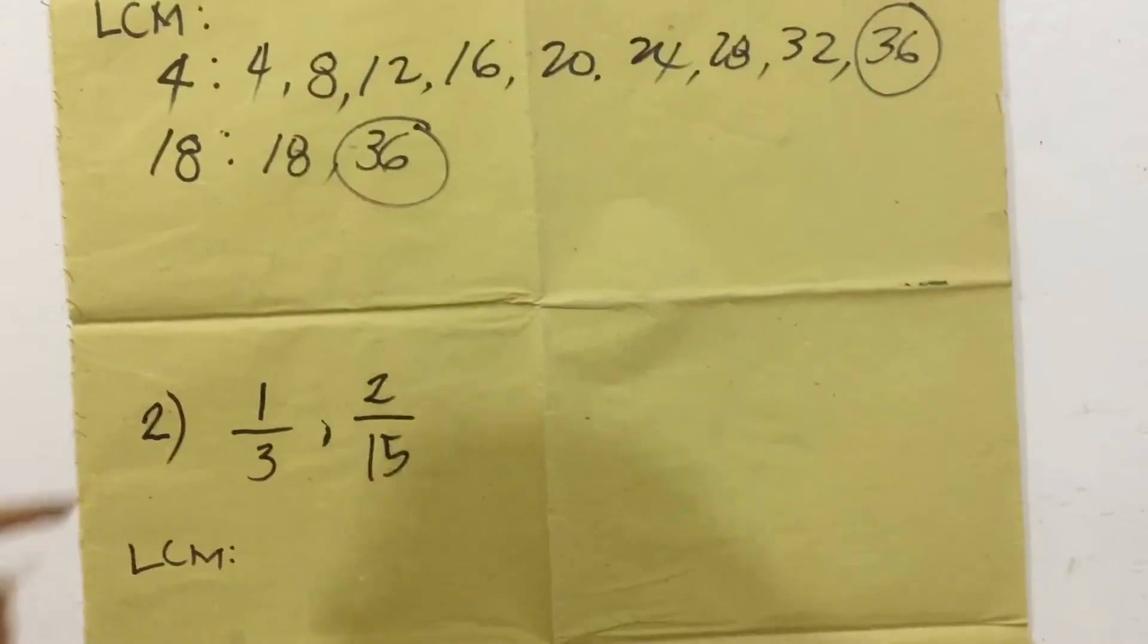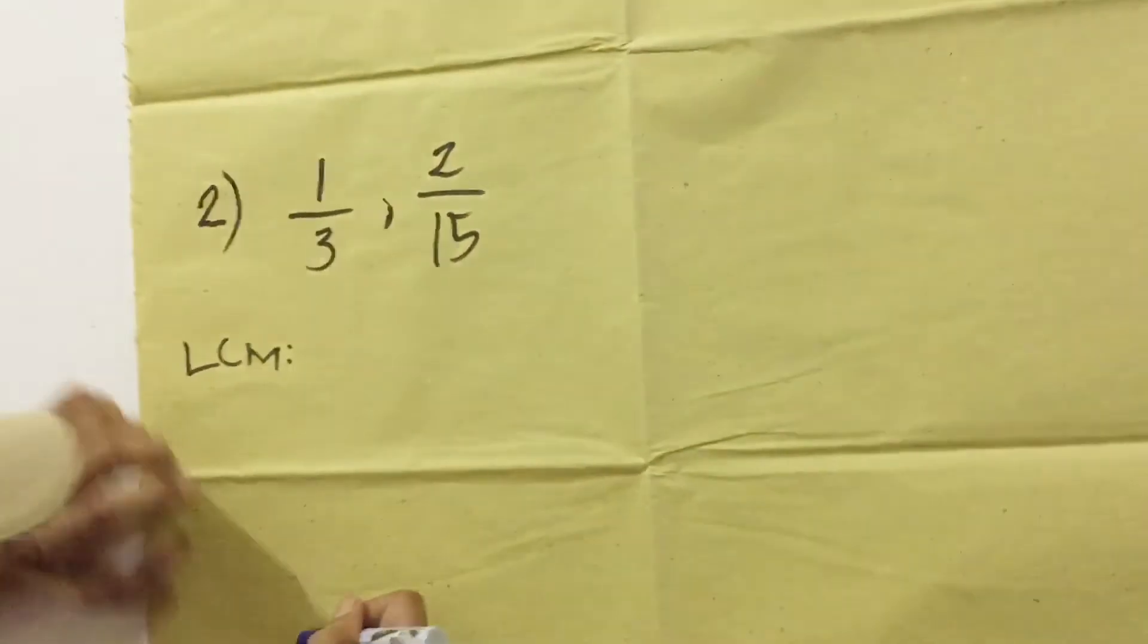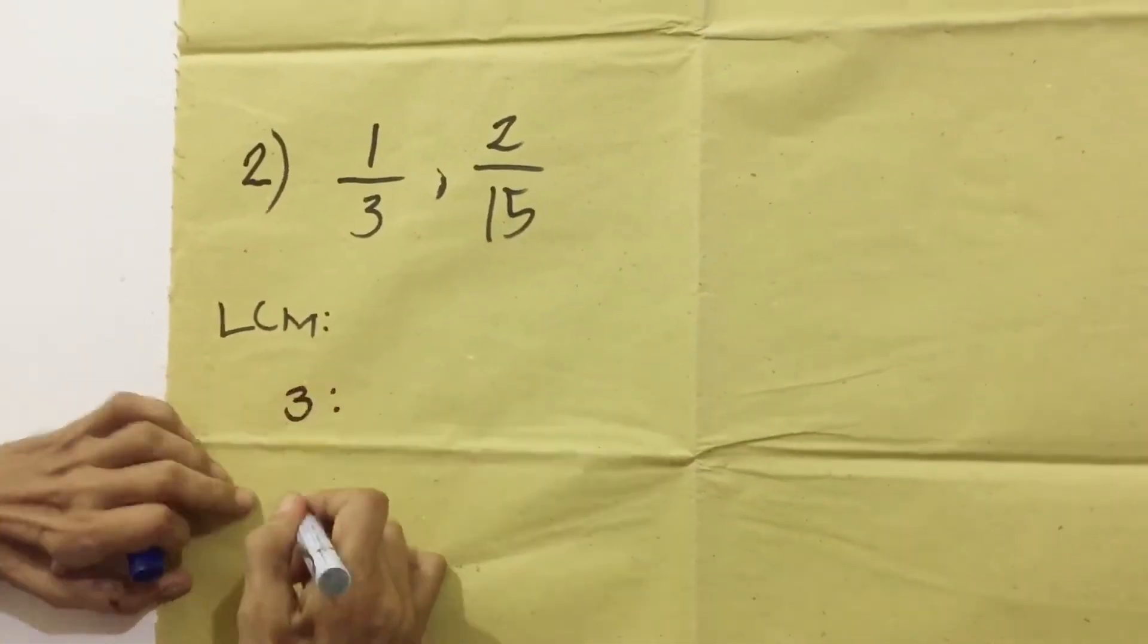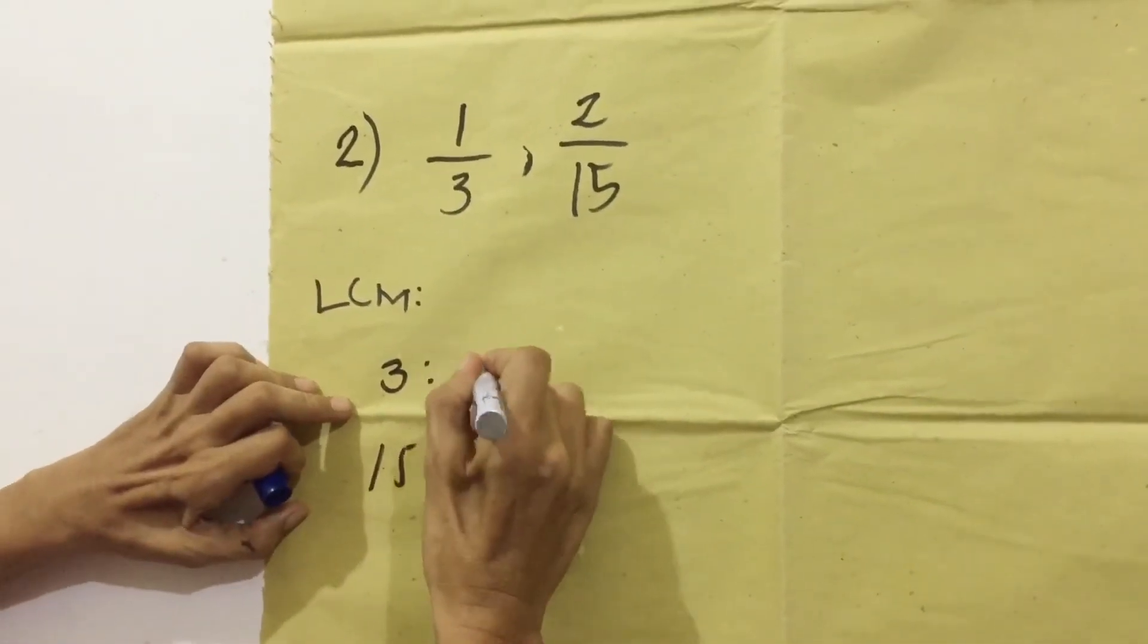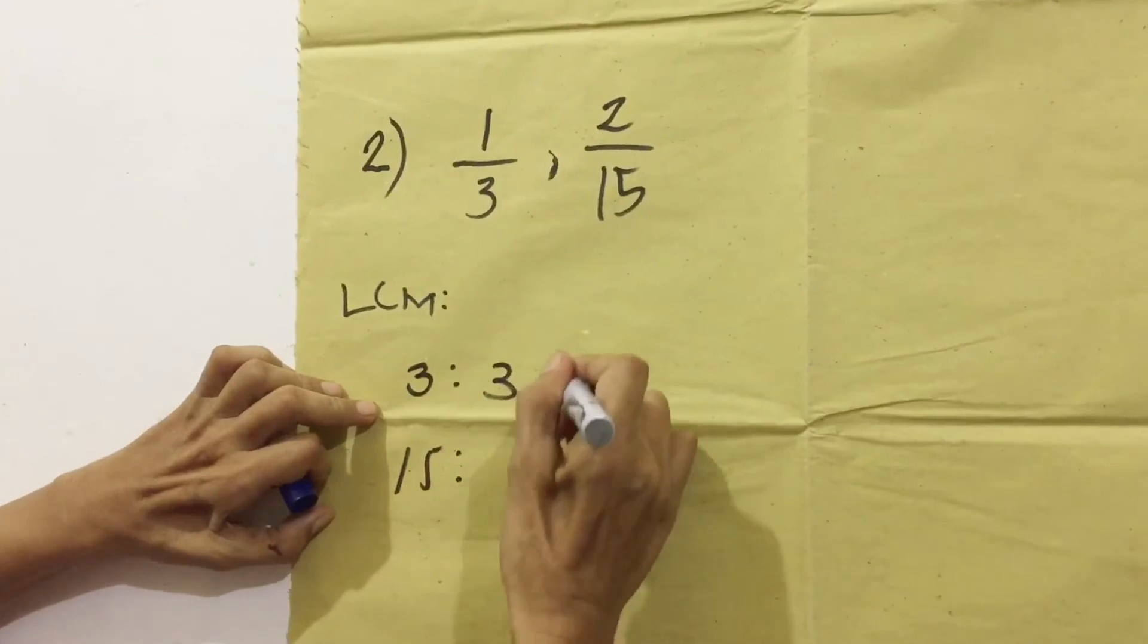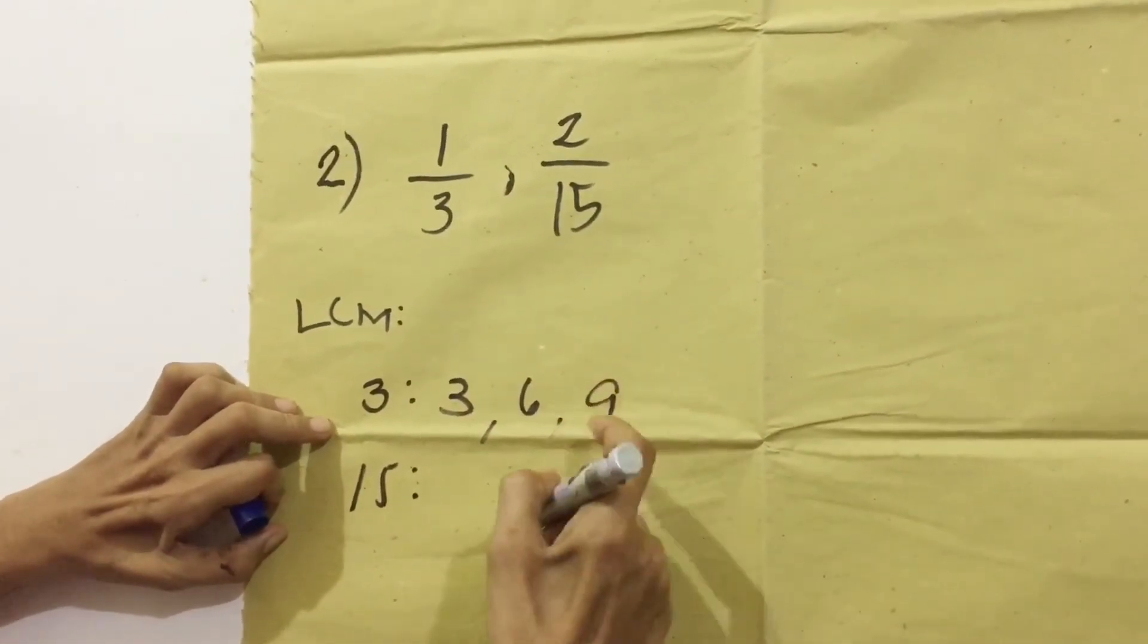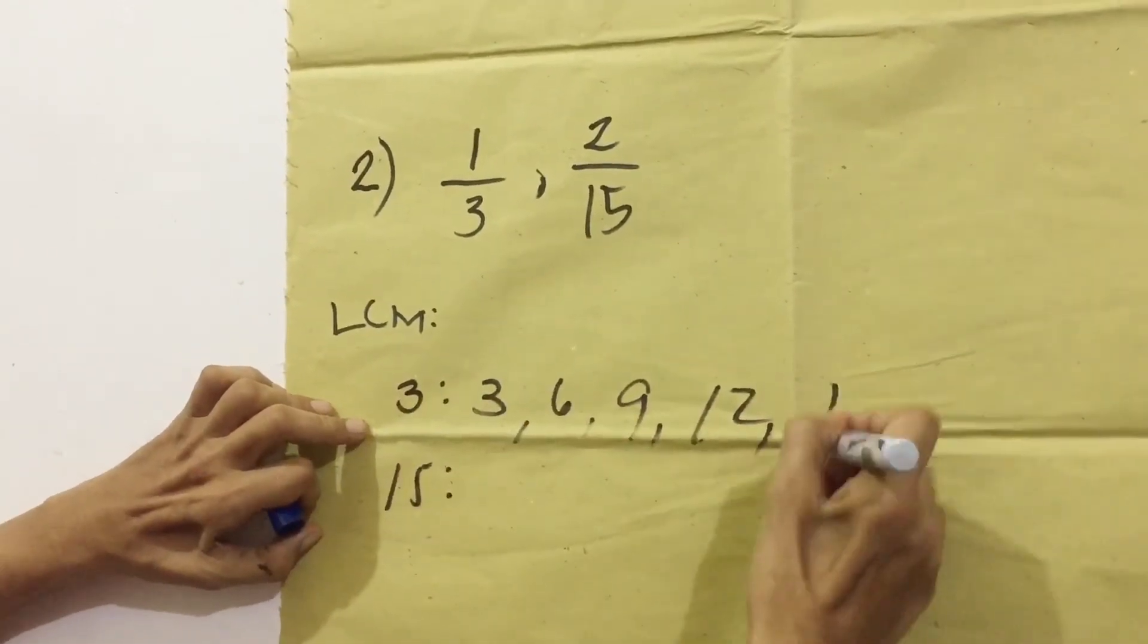Next, number 2: 1/3 and 2/15. Find the LCD. The same process. Copy the denominator 3, copy the denominator 15. Then 3, 3 plus 3 equals 6, 6 plus 3 equals 9, 9 plus 3 equals 12, 12 plus 3 equals 15.